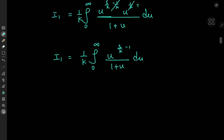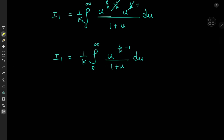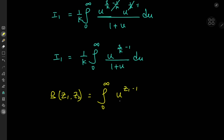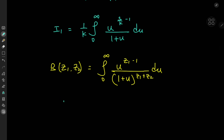Now this integral is actually the integral form of the beta function. In general, the beta function with complex arguments z₁ and z₂ is defined as the integral from 0 to infinity of u to the z₁ minus 1, divided by 1 plus u to the z₁ plus z₂, integration with respect to u. So in this case we have the target integral I sub 1 equal to 1 over k times the beta function evaluated at s over k, and the sum of the arguments should be 1.